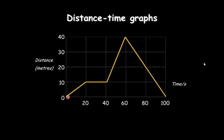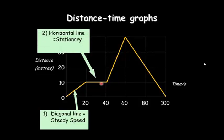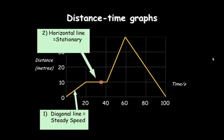So we look at this first section here. You can see it starts at a distance of zero and goes up to 10 in 20 seconds. Because it's a straight line, it means it's got a steady speed. So a steady speed from 0 to 10 meters. The second section is a horizontal line. All horizontal lines will mean that it stays at the same distance, so here it's staying at 10 meters, so it's stationary.